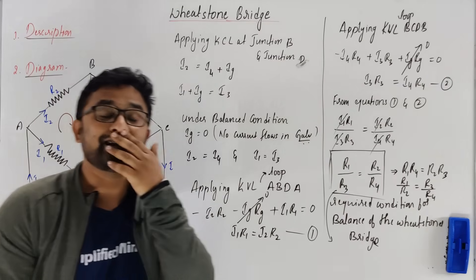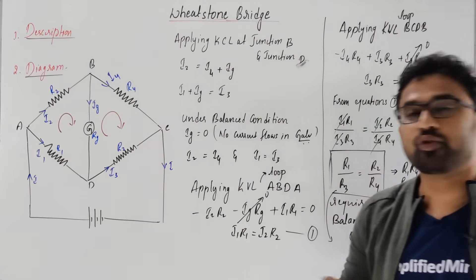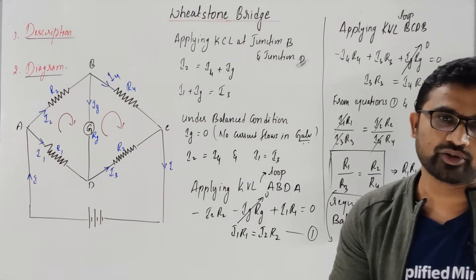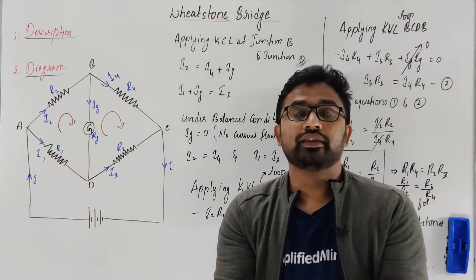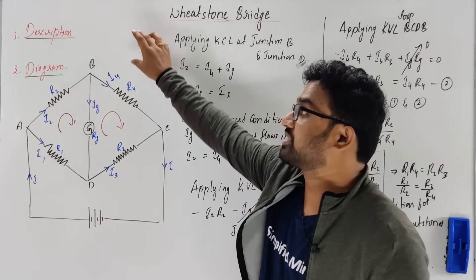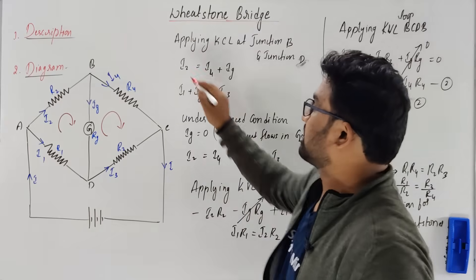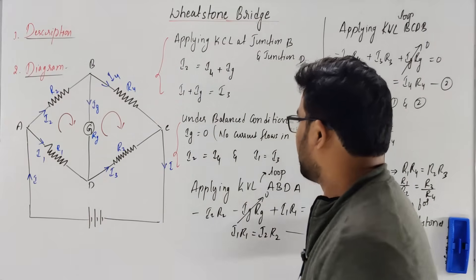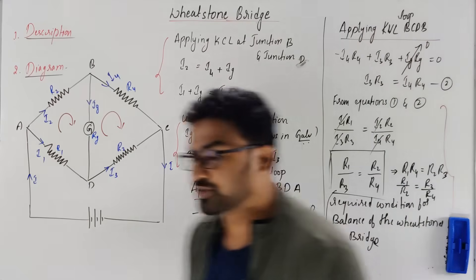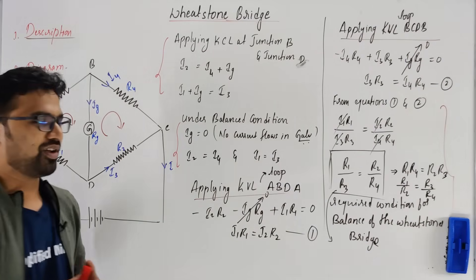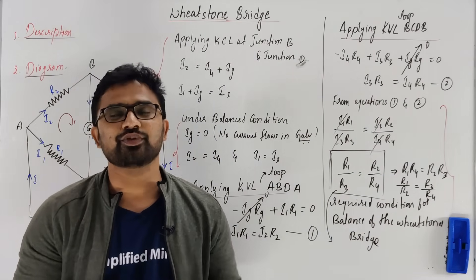Don't get confused — you should know all equivalent forms for the board exam and competitive exam. I hope the Wheatstone Bridge derivation is clear. Always: first watch the derivation completely, then write it without seeing — along with statements, description, diagram, and the conditions. Apply KCL, apply KVL to both loops, get the equations. Thank you so much for watching, have a nice day, see you in the next video, bye bye, take care.